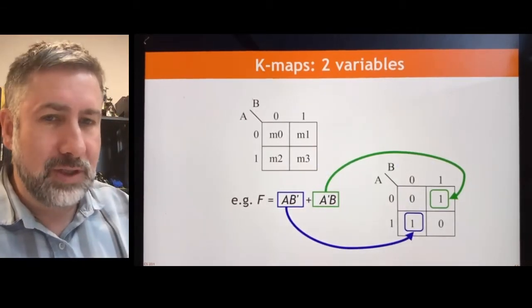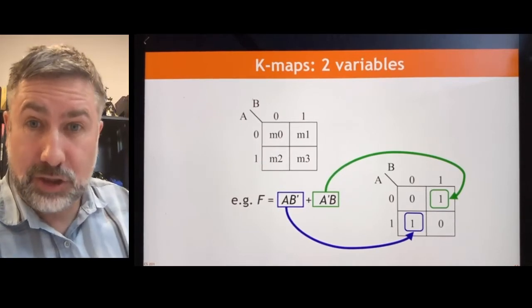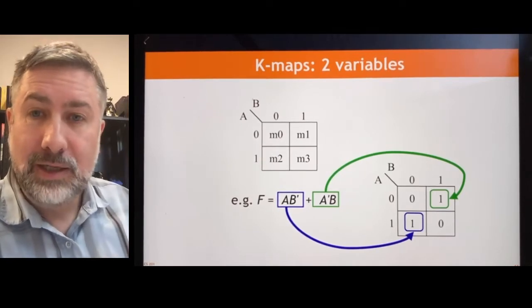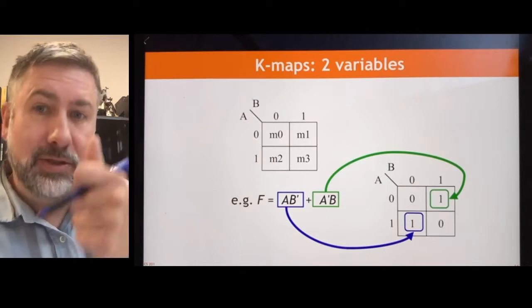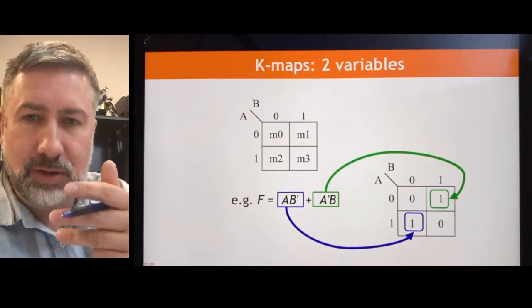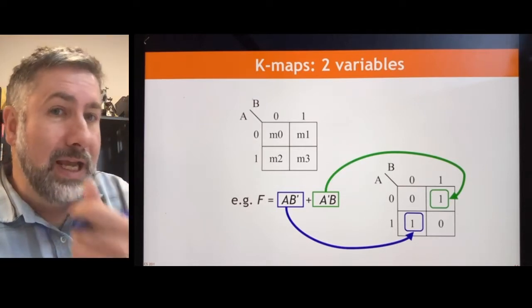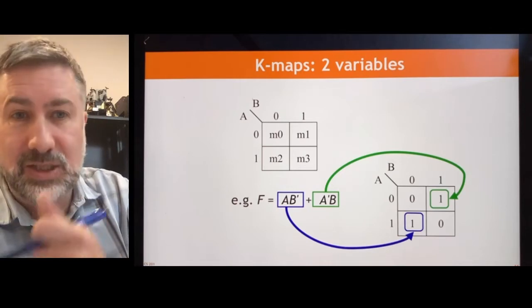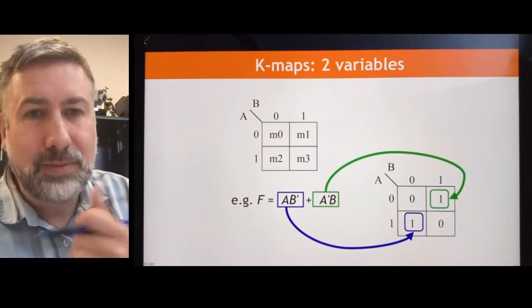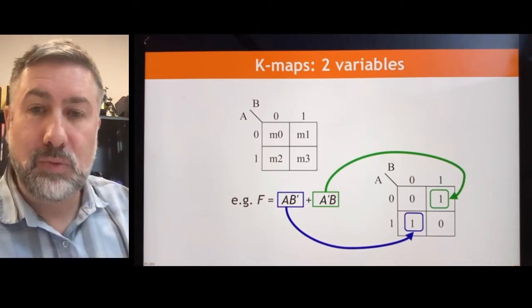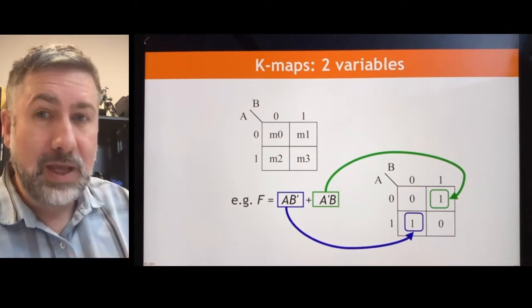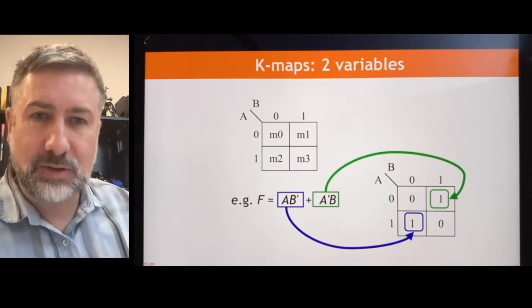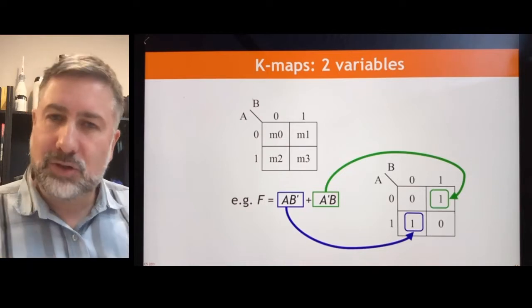So we take a two-variable K-map, this is the nicest, simplest, easiest version of this. A two-variable function, a function of A and B, has four possibilities, minterm 0, minterm 1, minterm 2, and minterm 3. These are when A and B are both 0, when A is 0 and B is 1, when A is 1 and B is 0, and when A and B are both 1. And a Karnaugh Map lists those out in such a way that we can actually make some interesting simplifications.